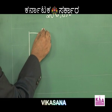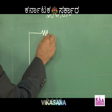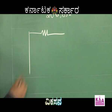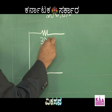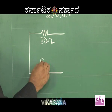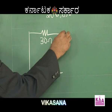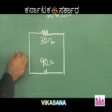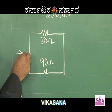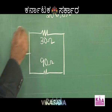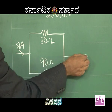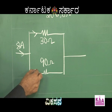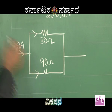Consider two resistors R1 and R2. R1 is 30 ohm and R2 is 90 ohm. Assume you have 8 amperes of current flowing and you are asked to find out the current through the 30 ohm resistor and the current through the 90 ohm resistor.